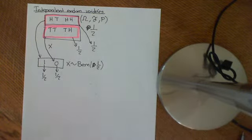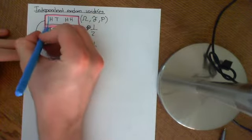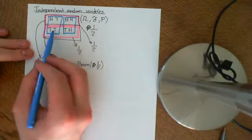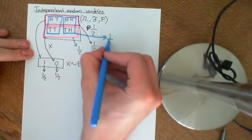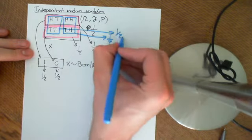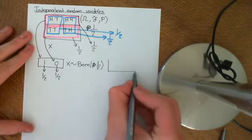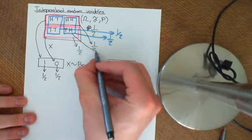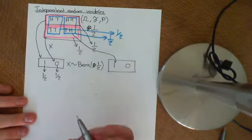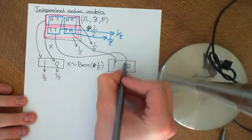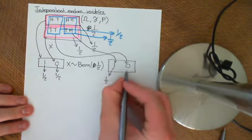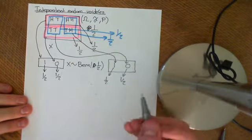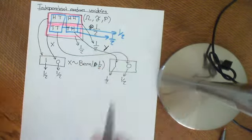Now let's make another random variable on the same probability space. This event is the event that you get a head on the second flip, and this is the event that you get a tail on the second flip. The probability of each is a half. Let's map this onto another Bernoulli one-half space — map it onto 1 and 0. Let the event of a head on the second flip go onto 1, and the tail go onto 0. Again, these will have half and half, so it will have the Bernoulli one-half distribution. Let's call this random variable Y.